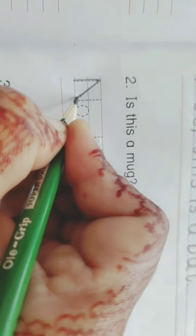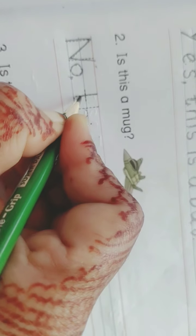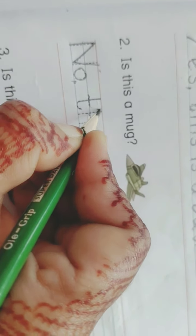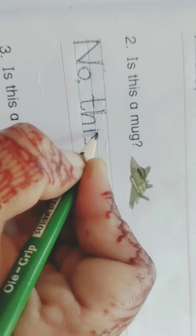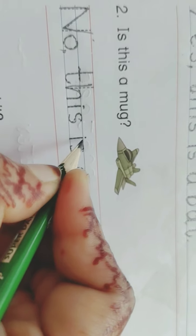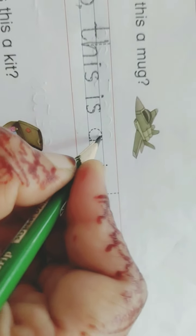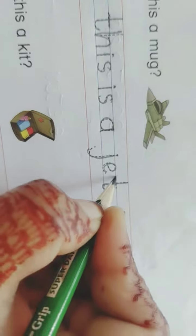This is a jet. No, N-O, no. This, T-H, I-S, this is, I-S, is a jet. J-E-T, jet. Okay.